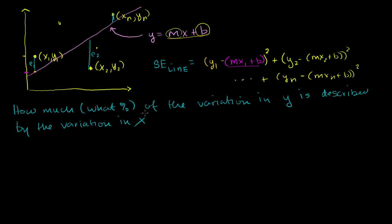So let's think about this. How much of the total variation in y — there's obviously variation in y; this y value is over here, this point's y value is over here, there's clearly a bunch of variation in y. But how much of that is essentially described by the variation in x, or described by the line? First, let's think about what the total variation is — the total variation in y.